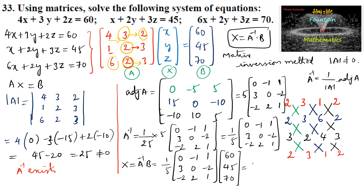On simplifying, we get 1 over 5 times: the first entry is 0×60 minus 1×45 plus 1×70, giving negative 45 plus 70 equals 25. The second entry: 3×60 minus 2×70 gives 180 minus 140 equals 40. The third entry: negative 2×60 plus 2×45 minus 1×70 simplifies to negative 120 plus 90 plus 40 equals negative 30 plus 70 equals 40. So the results are 25/5, 40/5, and 40/5.